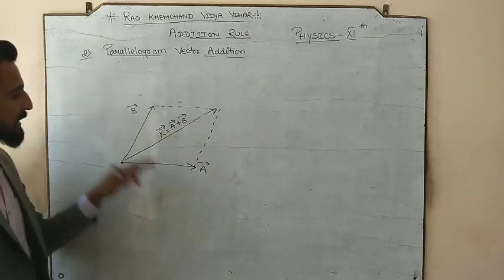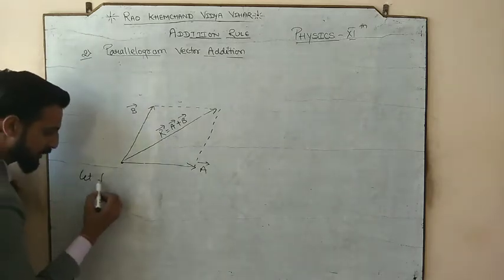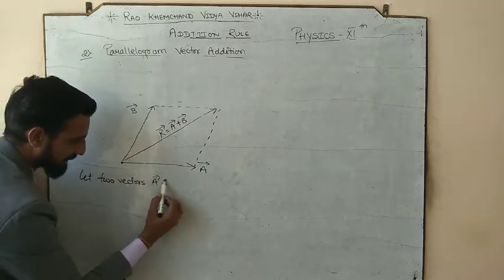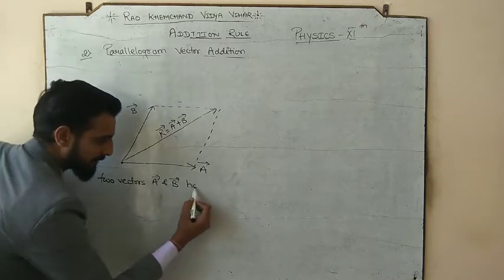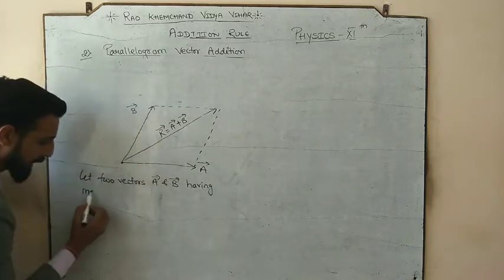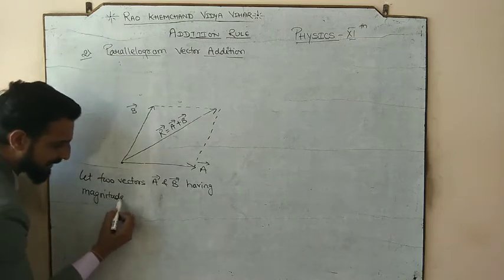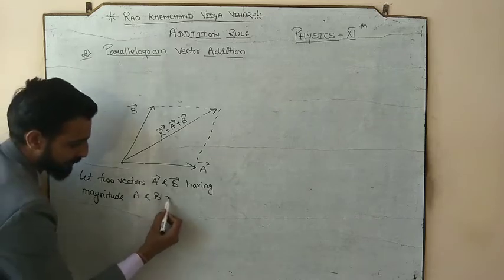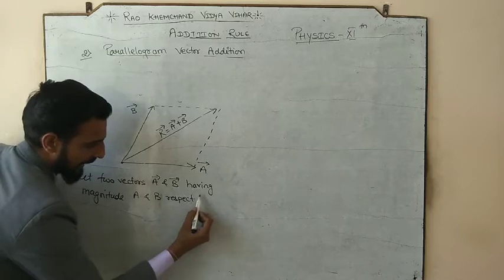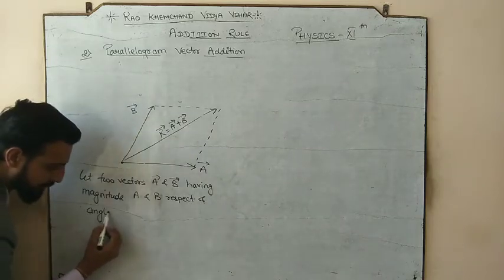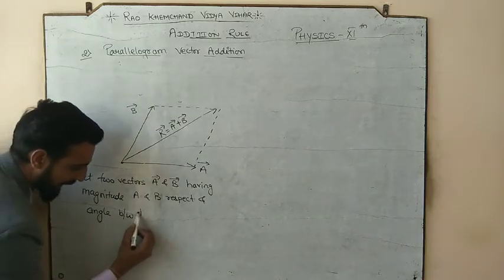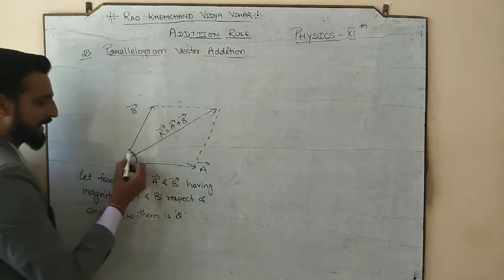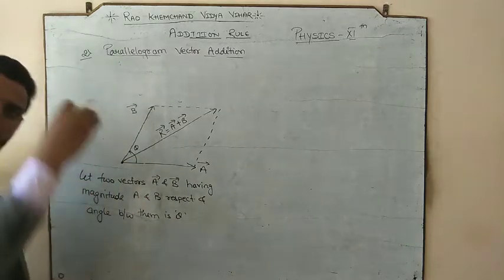Now let us work similarly to how we worked on the triangle — on the magnitude of the resultant as well as on the direction. Let two vectors, a vector and b vector, have magnitudes a and b respectively, and the angle between them is theta.